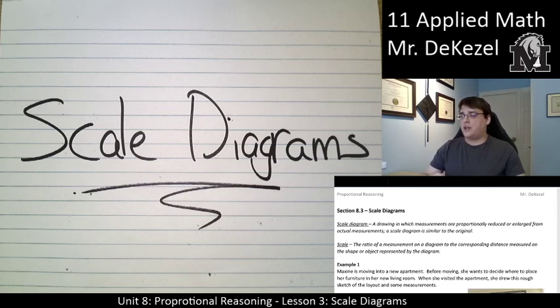A scale diagram is a drawing in which measurements are proportionally reduced or enlarged from actual measurements. So the scale diagram is similar to the original. Scale is the ratio of a measurement on a diagram to the corresponding distance measured on the shape or object represented by the diagram. So essentially how much larger or how much smaller is this object? Sometimes when we're looking through a microscope we're going to be able to scale it up a hundred times, or you might want to make something smaller if you're drawing the diagram of a building like a blueprint.